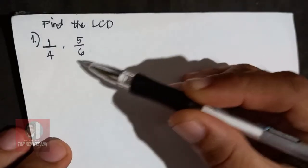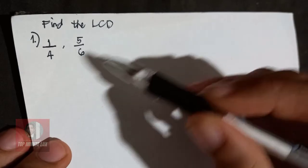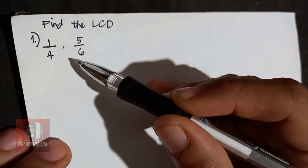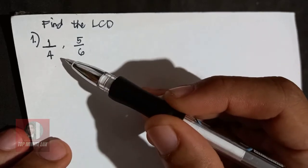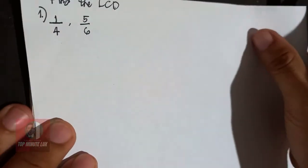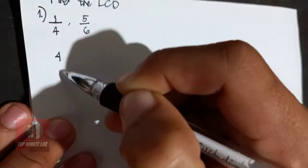Example, 1/4 and 5/6. As you can observe, this pair of fractions are dissimilar because they have different denominators. So let's find the LCD. So first, 4, 6.